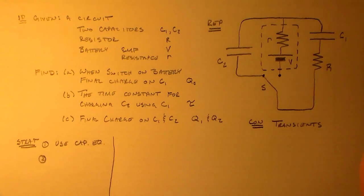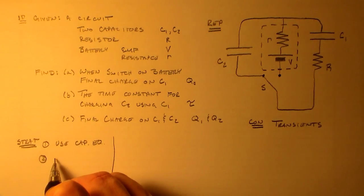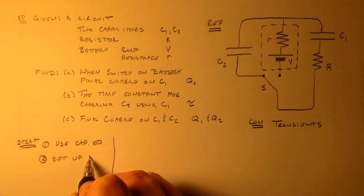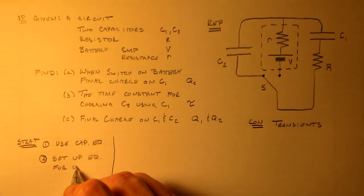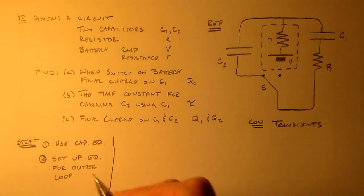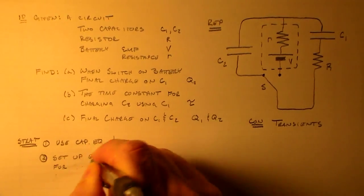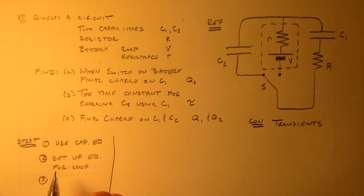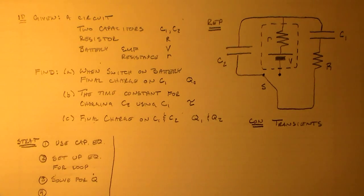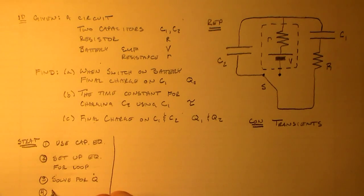The first thing I'm going to find is when the switch is on the battery, I want to find what the final charge on this capacitor is. So, that would be Q0, I'll call that Q0. B, the time constant for charging C2 using C1. And we'll just call that tau. Tau is a good letter. And C, let's find the final charge on C1 and C2. And we'll call those final charges Q1 and Q2.